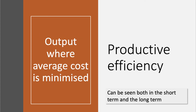Productive Efficiency is another type of efficiency and it's achieved at the output where the unit cost, or the average cost, is minimised. We can see productive efficiency both in the short term and also in the long term if you're thinking about economies and diseconomies of scale.